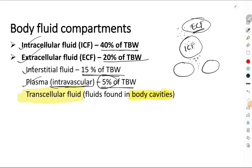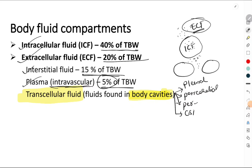What are the examples of this transcellular fluid? One example is the fluid which is present in the pleural space, which is called as pleural fluid. Fluid which is present in the pericardial space is called as pericardial fluid. Fluid which is present in the peritoneal space is called as peritoneal fluid. There is also cerebrospinal fluid, which is nothing but the transcellular fluid.